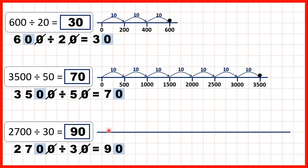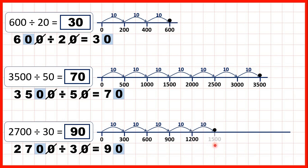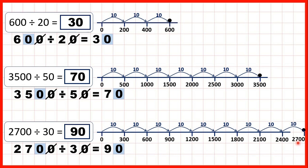And here on a number line, instead of counting in steps of 30, we count in steps of 300, because that's 10 lots of 30. Adding 10 lots of 30 each time takes us to 600, 900, 1,200, 1,500, 1,800, 2,100, 2,400, and then 2,700. Because we counted in steps of 10 times 30 nine times, our answer is 90.